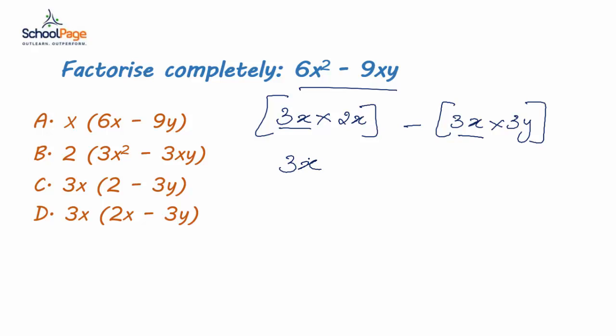It is easy for us to eliminate the wrong answers. Option a and option b do not have 3x as greatest common factor. Hence, these two options are wrong options.